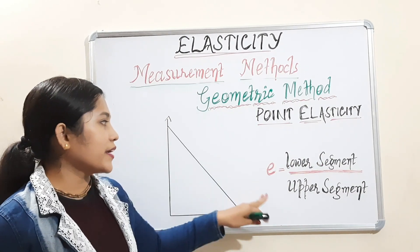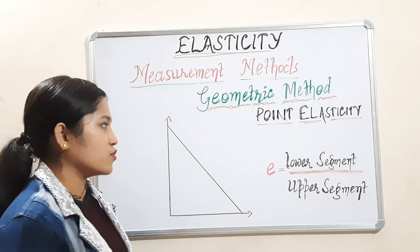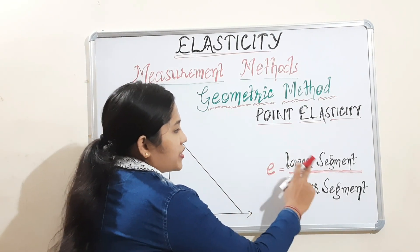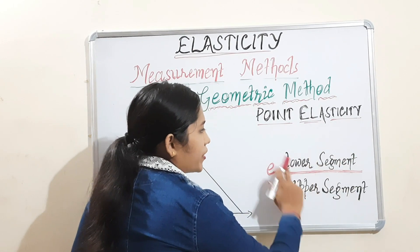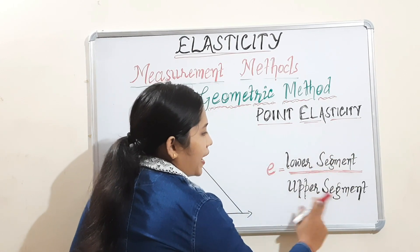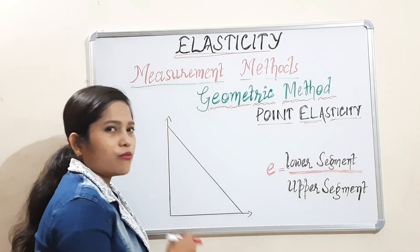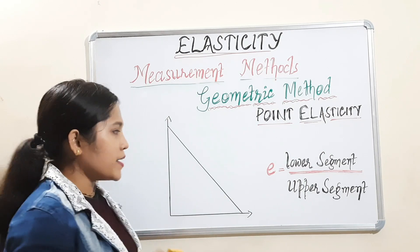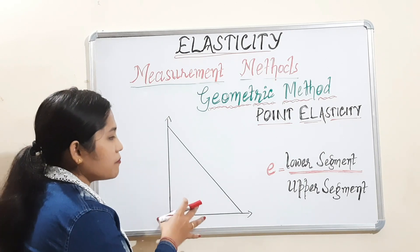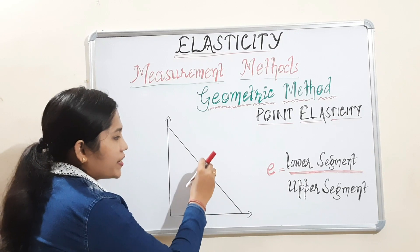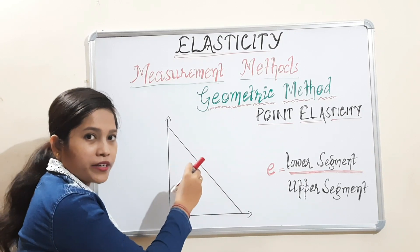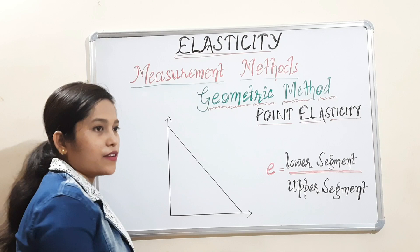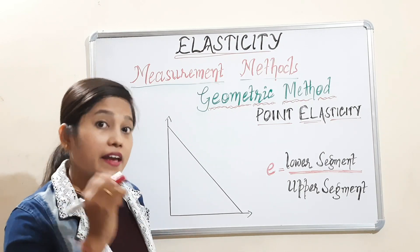The formula to get the point elasticity: the elasticity value can be measured when we divide the lower segment by the upper segment. What is the segment? Segment means we are measuring elasticity at every point, so taking the segments on the straight line, we will measure the elasticity at every point.